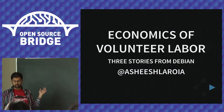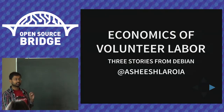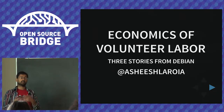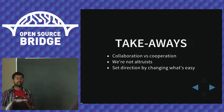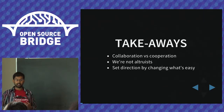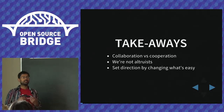The title of the talk is 'Economics of Volunteer Labor: Three Stories from Debian.' The three important takeaways are: the distinction between collaboration and cooperation, how Debian developers aren't really altruists and misunderstanding that leads to wrong conclusions, and how to set direction in your open source community by changing what's easy for other community members to do.